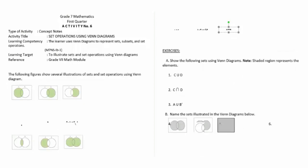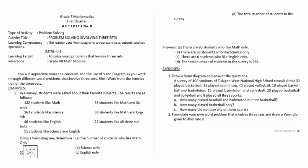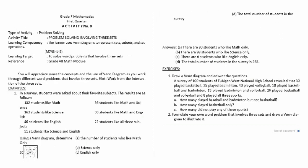Activity number seven is problem solving involving two sets. Activity number eight is problem solving involving three sets.